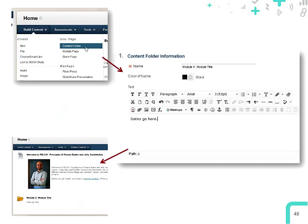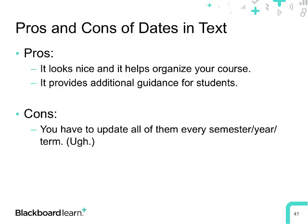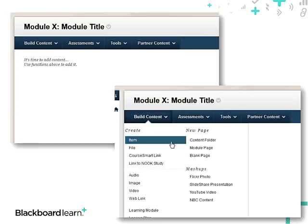Back in my home area, I'm going to create a new content folder. The name of my folder is 'Module X — Module Title,' using X as a placeholder. In the text area, I've got a note that 'dates go here' — when I populate this template, I'll put the module dates there. The pros of using dates in text are that it looks nice and helps organize your course so students don't have to keep referring back to the syllabus. The con is that you have to update this every semester, which is a bit of a pain.